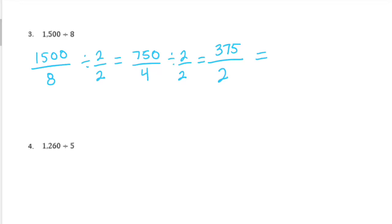So 375 divided by 2. 300 divided by 2 is 150. So then we just have 75 left. So 50 divided by 2 is 25. So then we have 25 divided by 2 is 12 and a half. So if I add all of that up, I get 187 and a half.